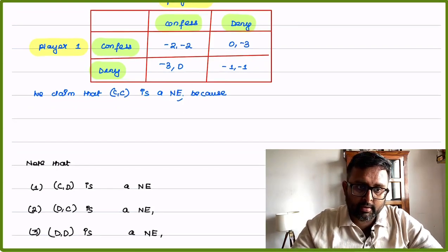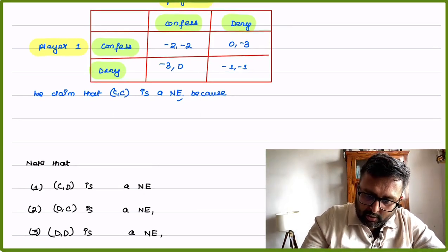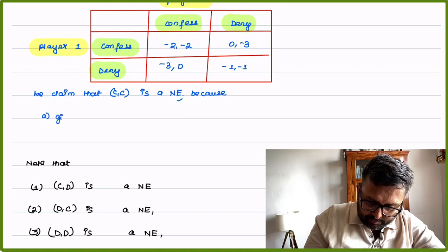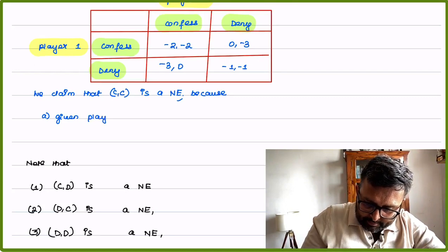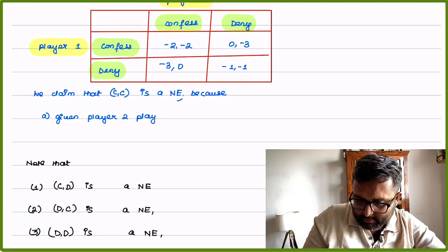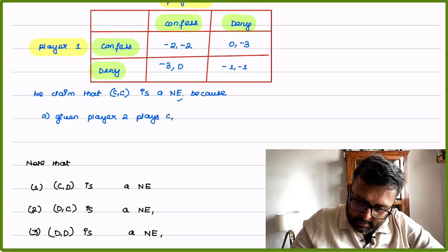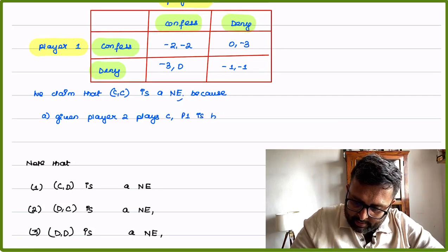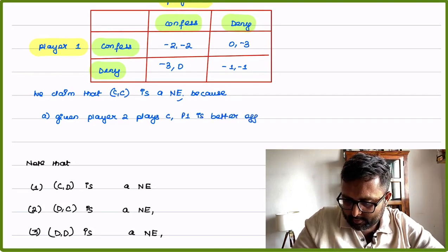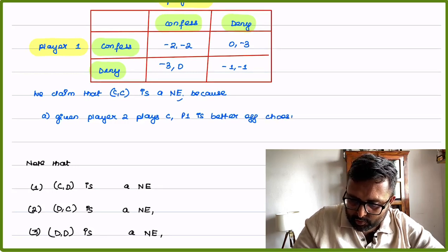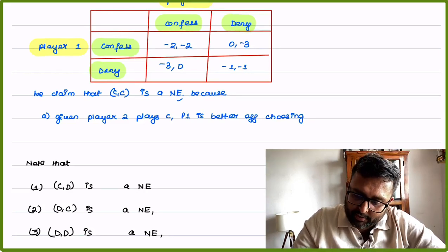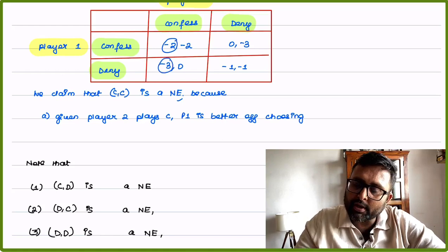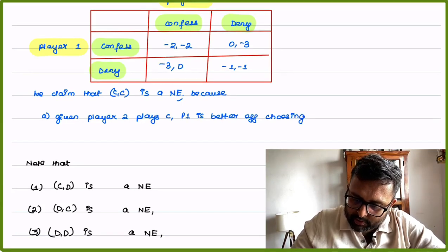How do we prove this technically? Given player 2 confesses, player 1 is better off. Player 1 will have a choice between minus 2 and minus 3, and is going to pick minus 2. Player 2 is better off choosing confess.